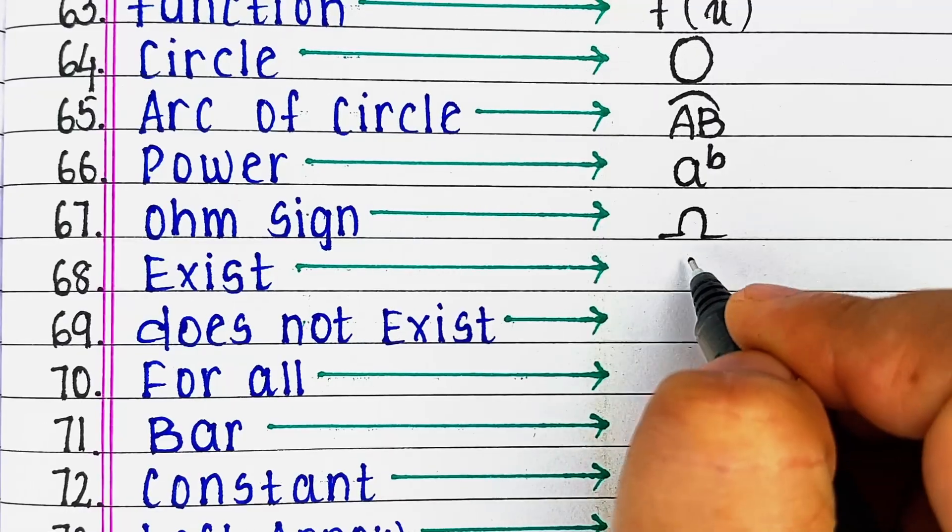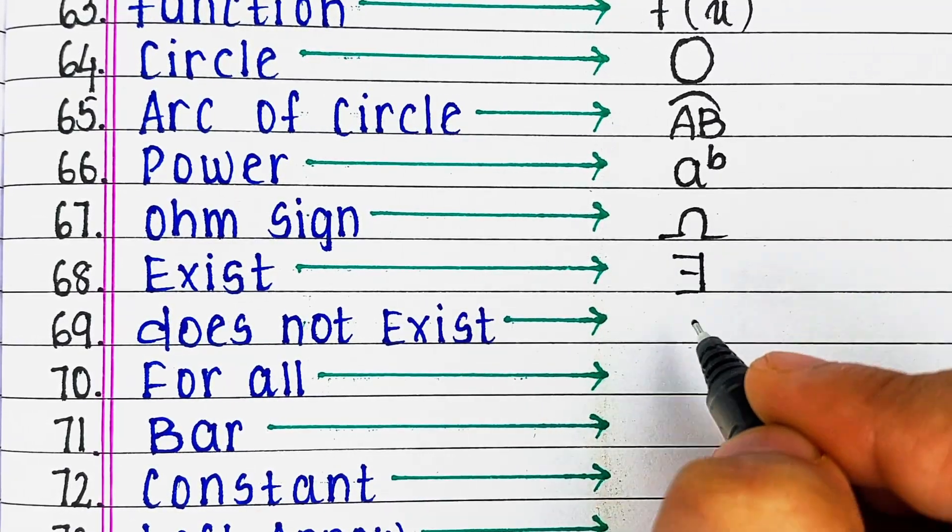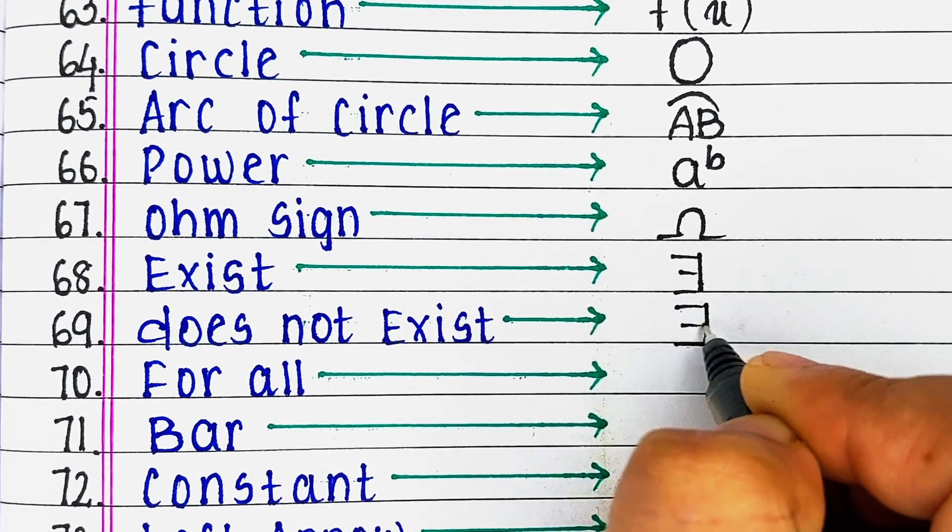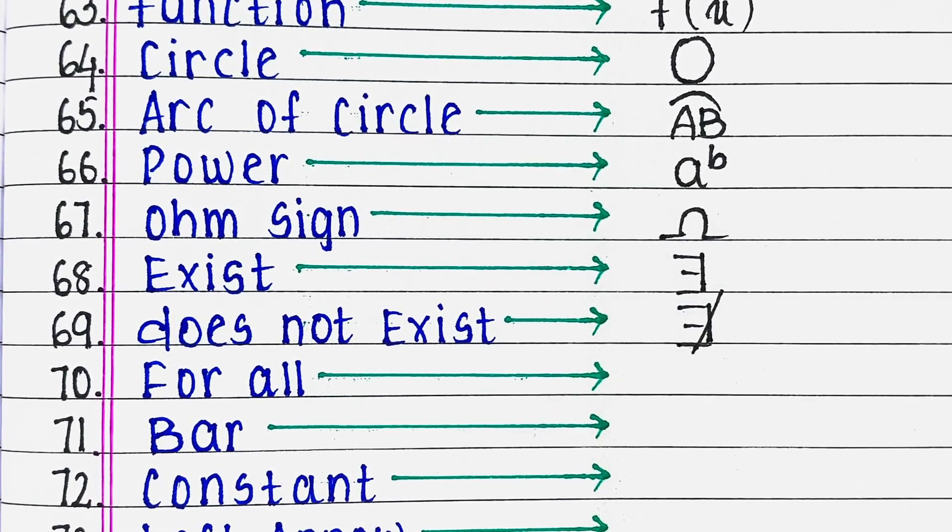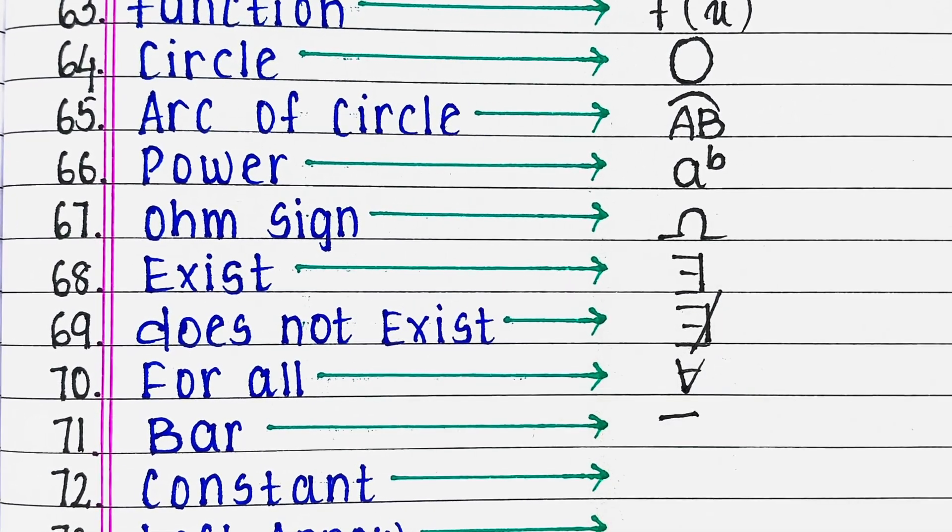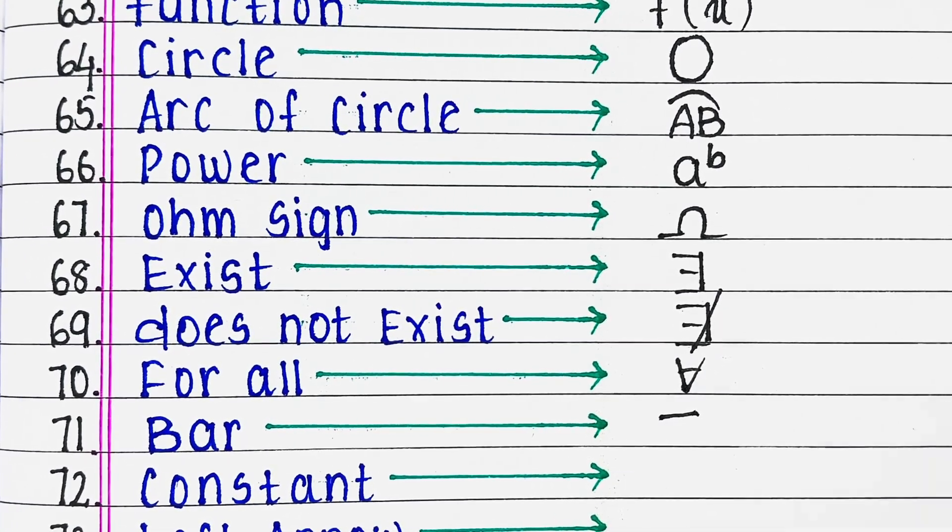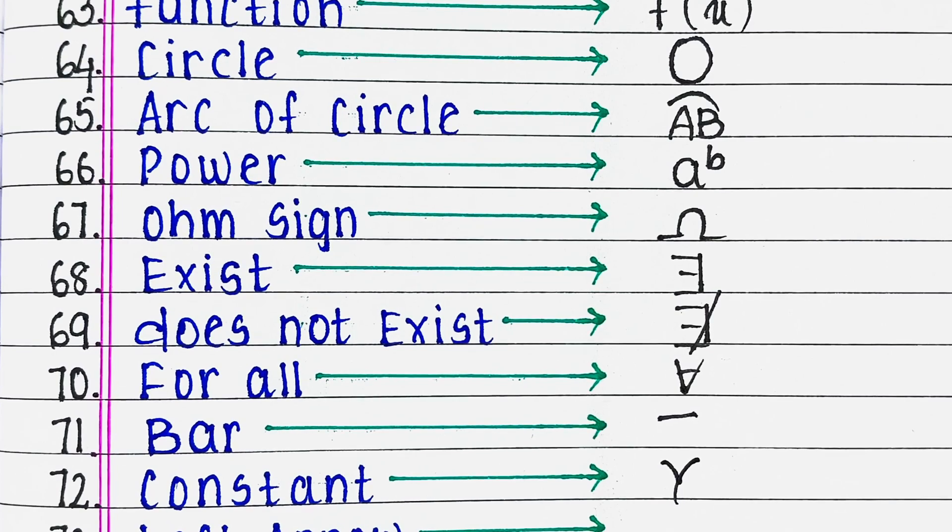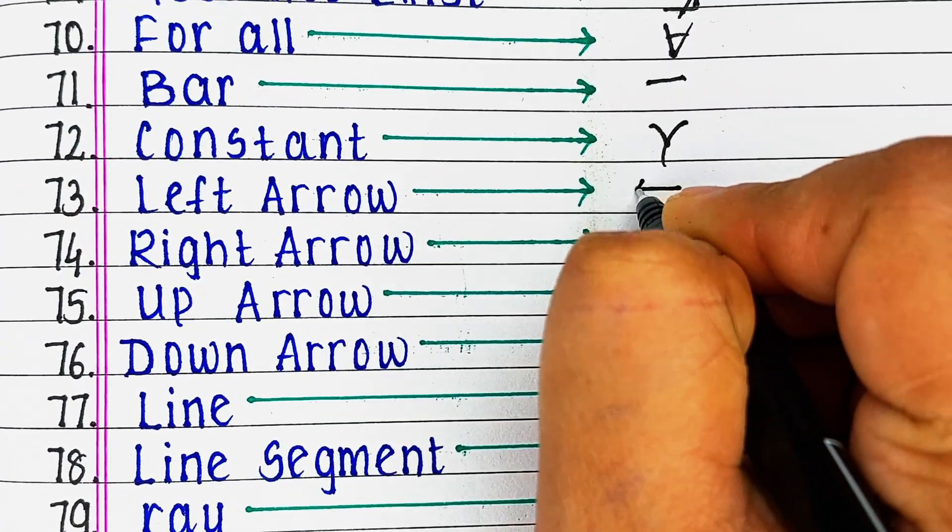Next is exist, next is doesn't exist, next for all, next bar, next is constant, next we have left arrow.